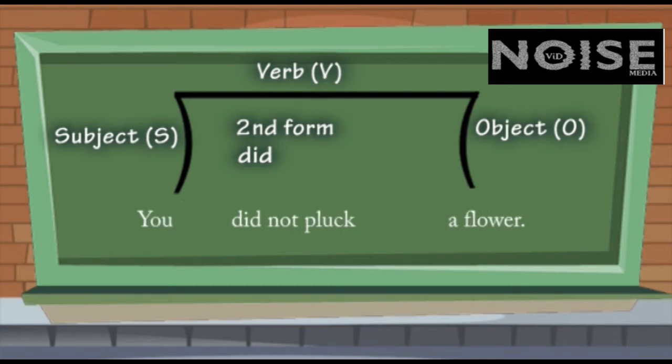You did not pluck a flower. If you look at this DID thing, it is the past form of DO. And once you change DO into DID, that means from present to past, it is a shift. Then you cannot say WROTE or PLUCKED. You did not pluck a flower. PLUCK goes back to the same form, the base form, because of DID.